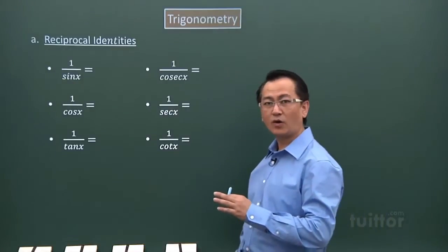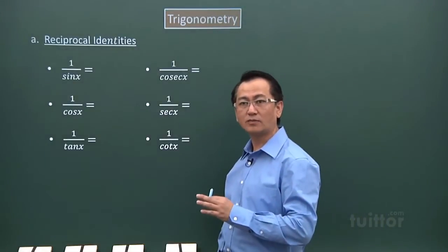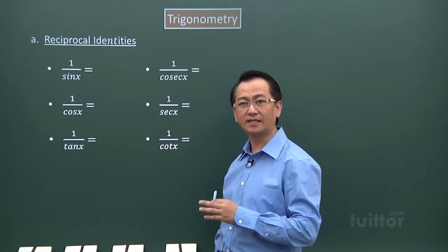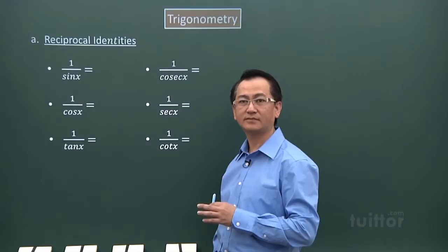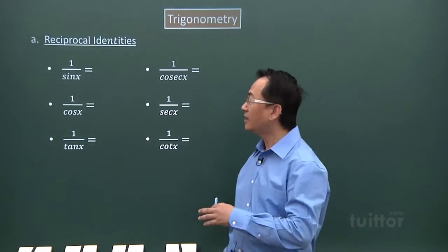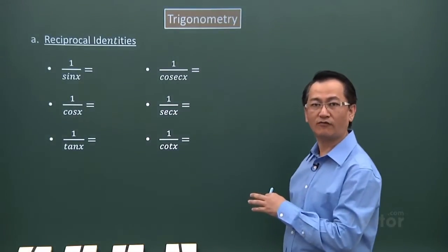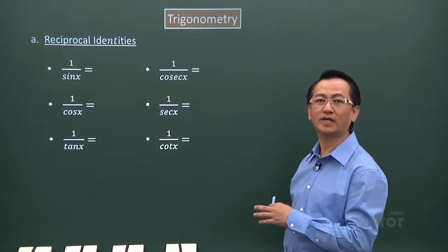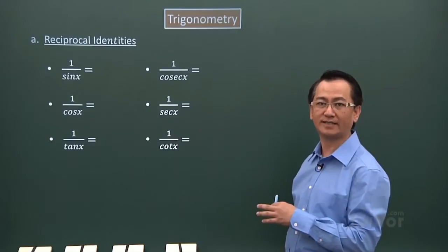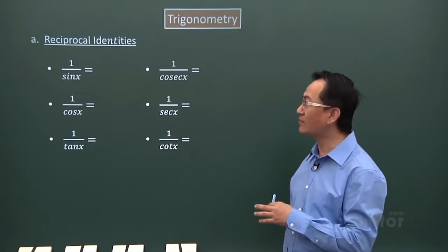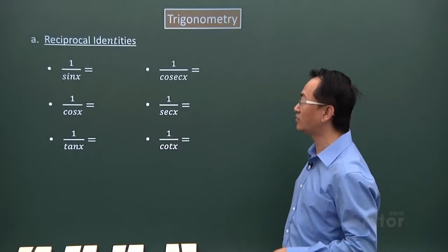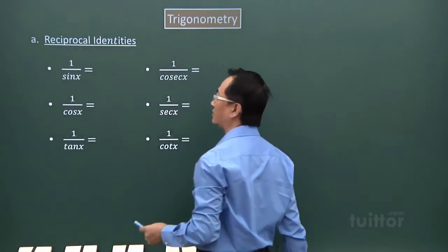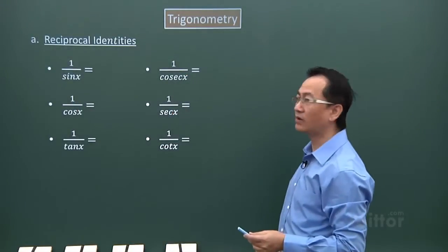We want to classify all the trigonometric identities so that it's easier to learn them. There is a whole set of trigonometric identities which we must learn before we can attempt the proving of identities. There are some easy ways to do that. For the first part, we call these reciprocal identities.